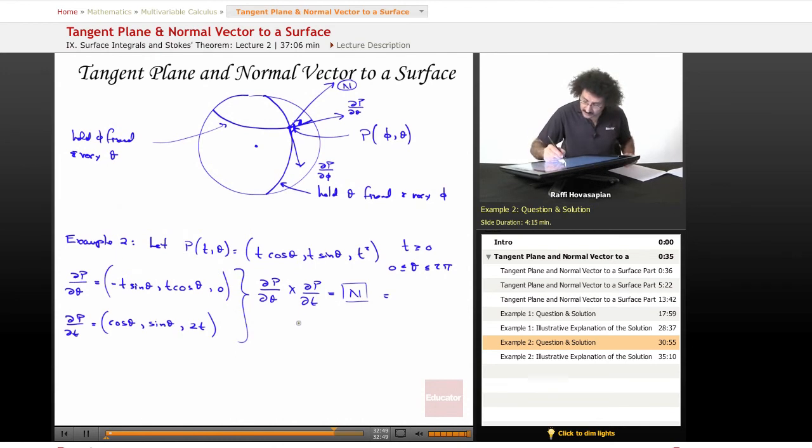Well, that's going to equal ijk, my symbolic representation, minus t sine theta, this is going to be t cosine theta, this is going to be zero. This is going to be cosine theta, this is going to be sine theta, and this is going to be 2t. I take the symbolic determinant of that expanded along the first row. So now I'm going to move to the next page. When I do that, I'll go ahead and let you confirm what it is that I end up getting.